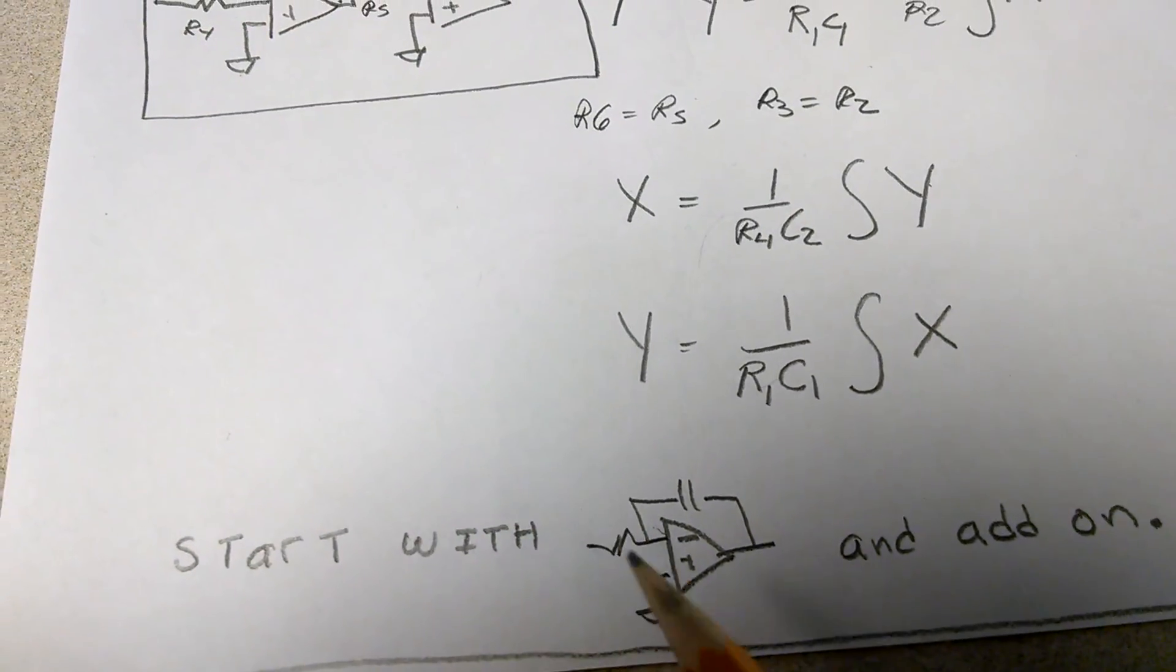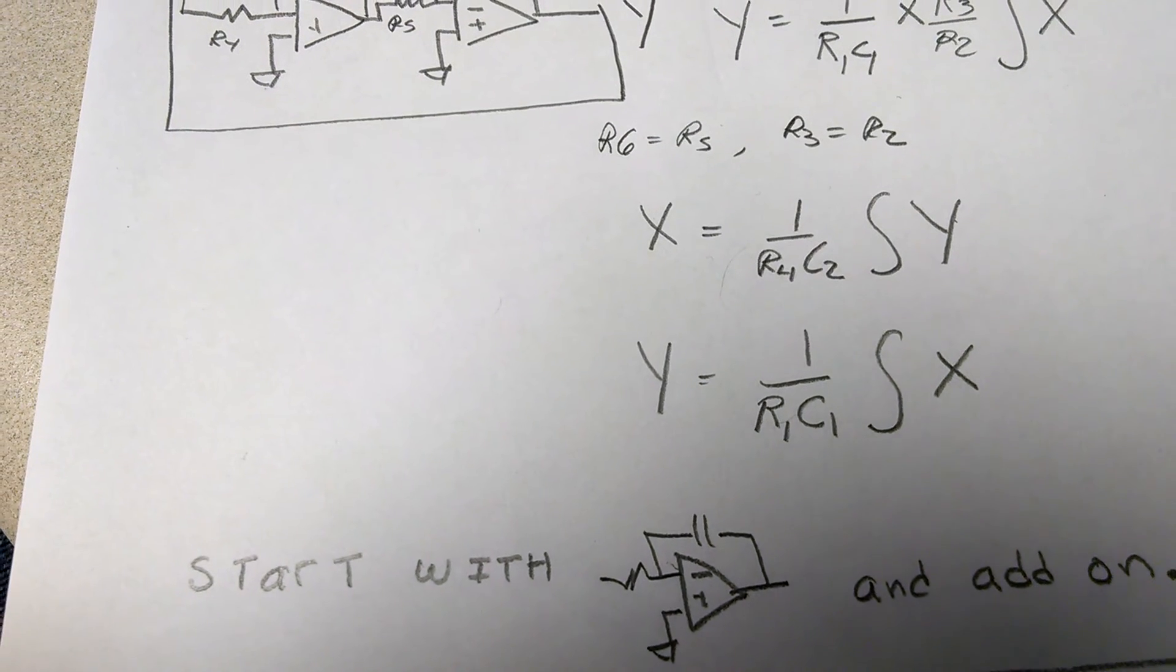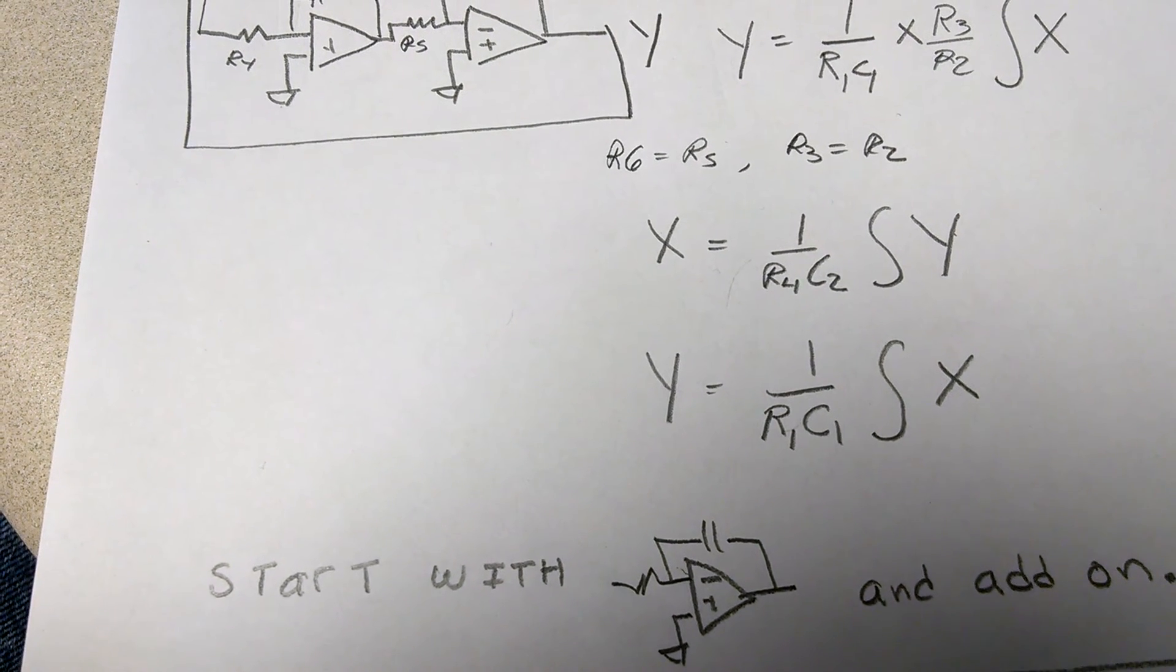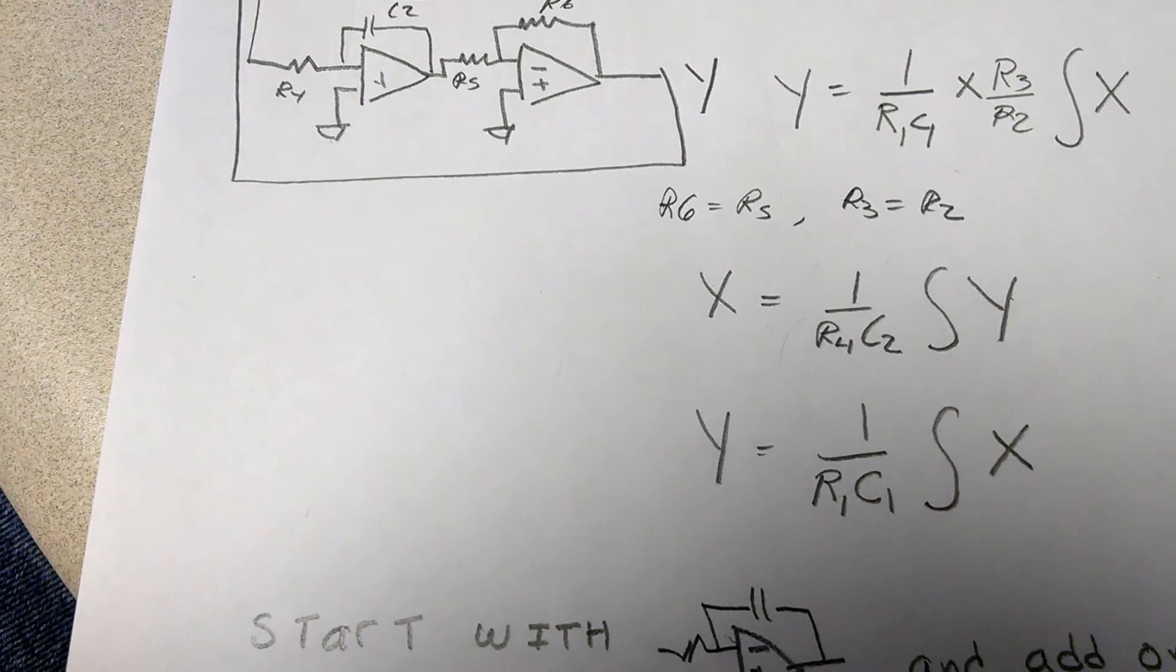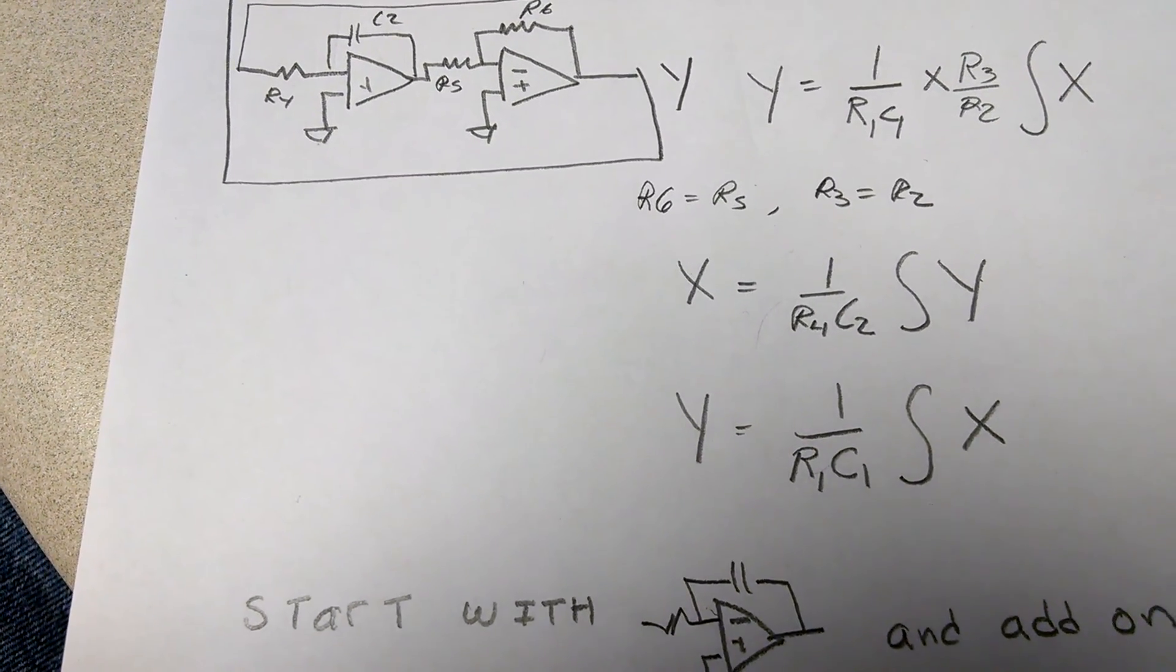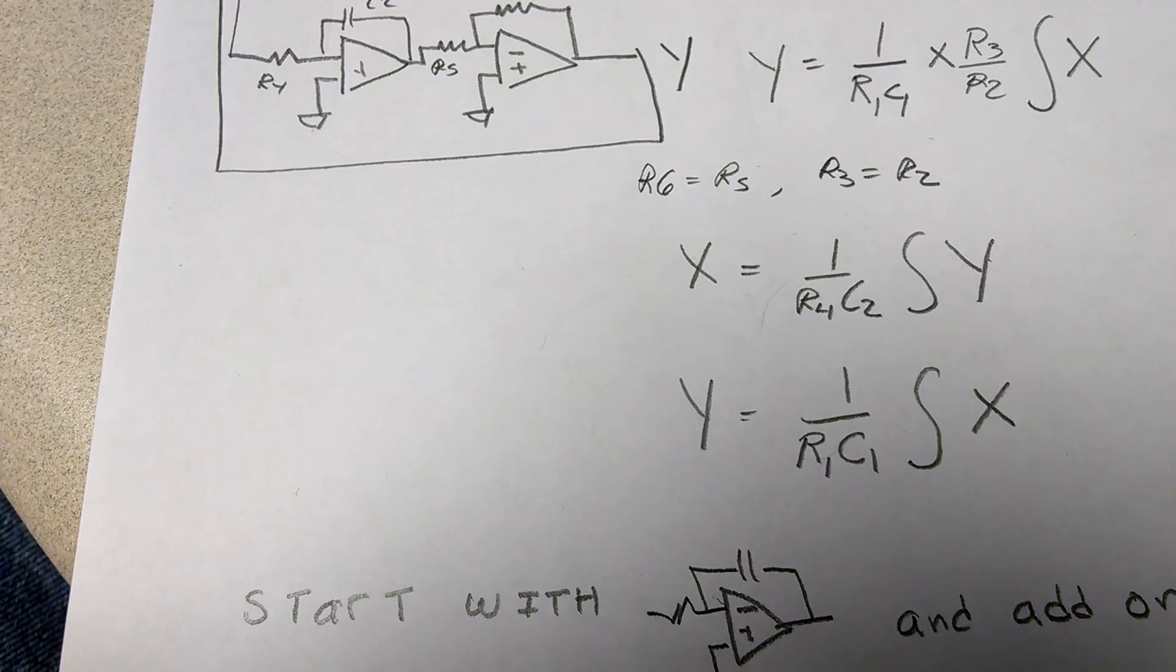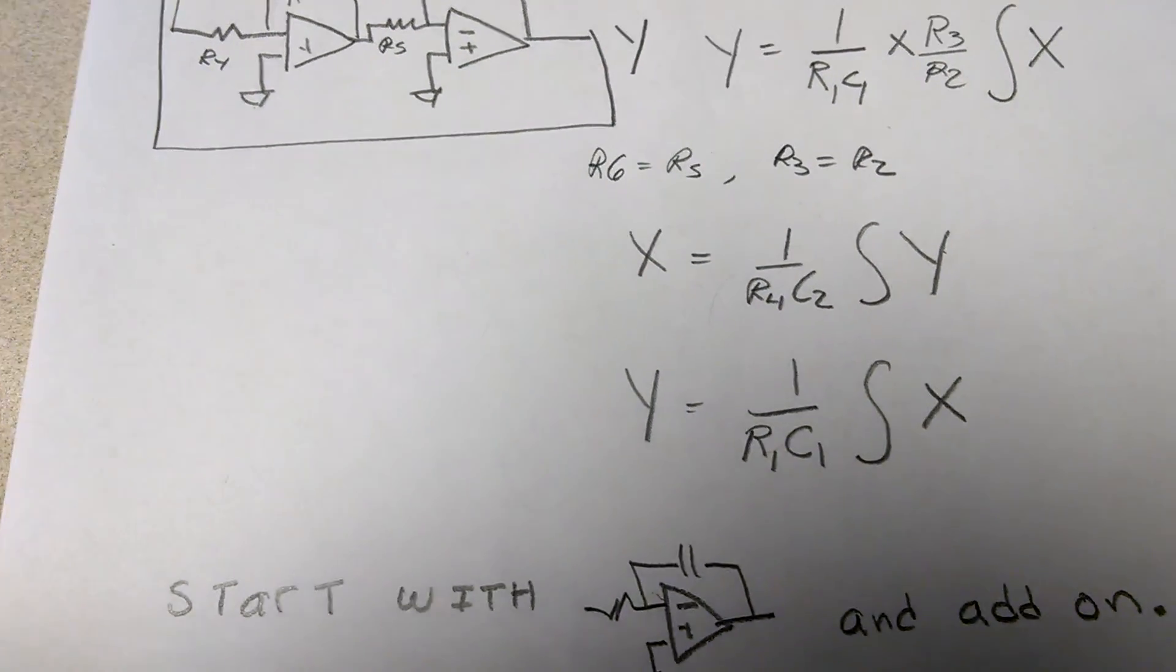So really, start with this and add on. I know the Hindmarsh-Rose looks very complex, but you can start simple, add on, and then start working on the R1, C1 constants to get it to work because you have to scale things. But don't try to solve that circuit all at once. Get your architecture, then do the timing, and then set your R1s and your C1s and all that. And that's it.